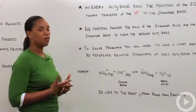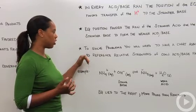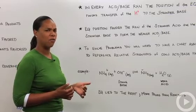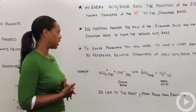Now it's time for a few pitfalls. To solve these problems, you're going to need a chart available to reference the relative strengths of the conjugate acid-base pairs. You can find one of those very easily online or in a textbook.